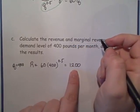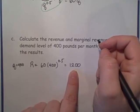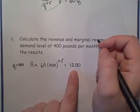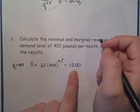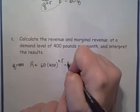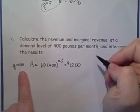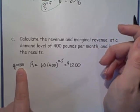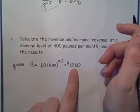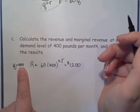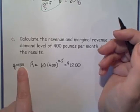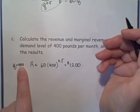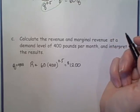Now what are the units on this revenue? Well, remember, the price is dollars per pound. The quantity is pounds. So this is just going to be dollars. When 400 pounds of tuna are sold at a price of $3 per pound, the revenue is $1,200. And another way to think about that is, well, 400 pounds of tuna, $3 per pound, 3 times 400 is $1,200.